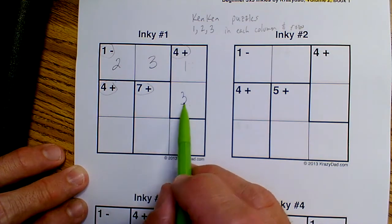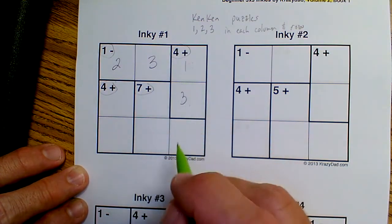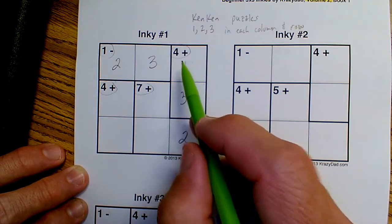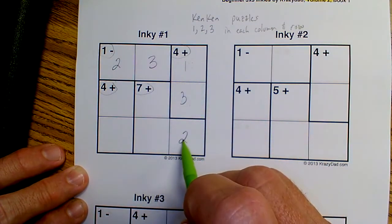I have a 3 and a 1 in this column, which means I need to have a 2 down there. So a 1, a 3, and a 2 in this column.